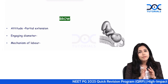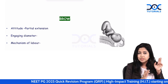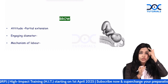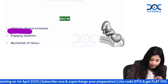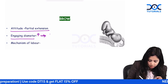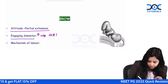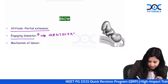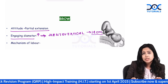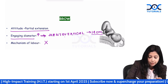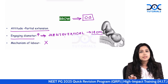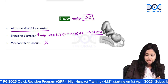Next is brow. When you have a completely flexed head the presenting part is vertex; completely extended gives face; partial extension gives brow. In brow, the attitude is partial extension and the engaging diameter is mento-vertical, which is 14 centimeters — the longest diameter. There is no mechanism of labour in brow; management is always cesarean section.